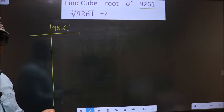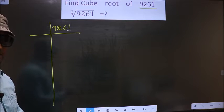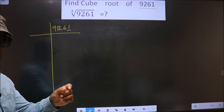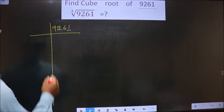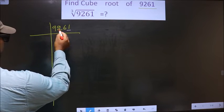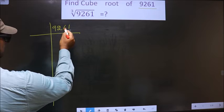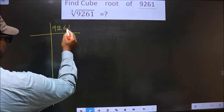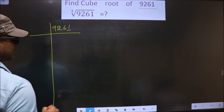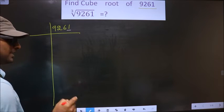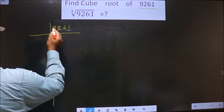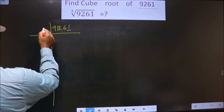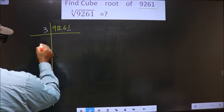Next prime number is 3. To check divisibility by 3, we should add the digits: 9 plus 2 plus 6 plus 1. We get 18. Is 18 divisible by 3? Yes. So this number is also divisible by 3, and we take 3 here.